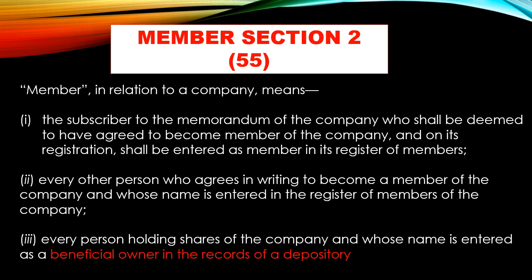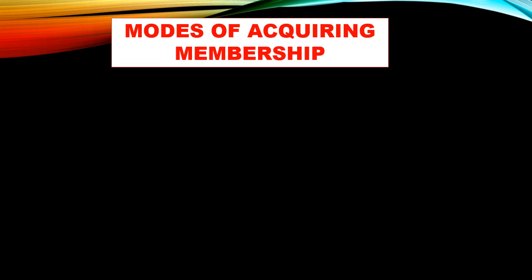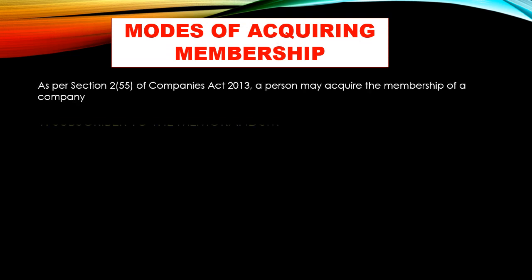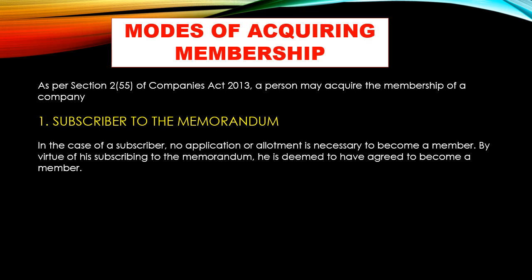But if shares are in electronic form, the depository records will be used to identify the member. Next are the modes of acquiring membership — how does any person become a member? First is subscriber to the memorandum. Subscribers are those whose names appear in the subscriber sheet of the memorandum of association and who promise to purchase the shares. When the company is incorporated, their names are registered in the register of members.